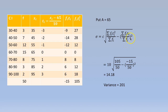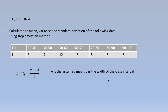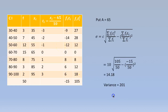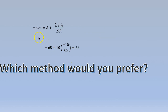This is similar to the shortcut method, only we multiply by c. Substituting, c equals 10, giving 10 times the square root of 105 by 50 minus (minus 15 by 50) squared, so sigma equals 14.18. Variance is sigma squared, which is 201. As a bonus, the mean using step deviation method is: mean equals a plus c times (summation fi·ti by summation fi), that is 65 plus 10 times (minus 15 by 50), which gives 62.